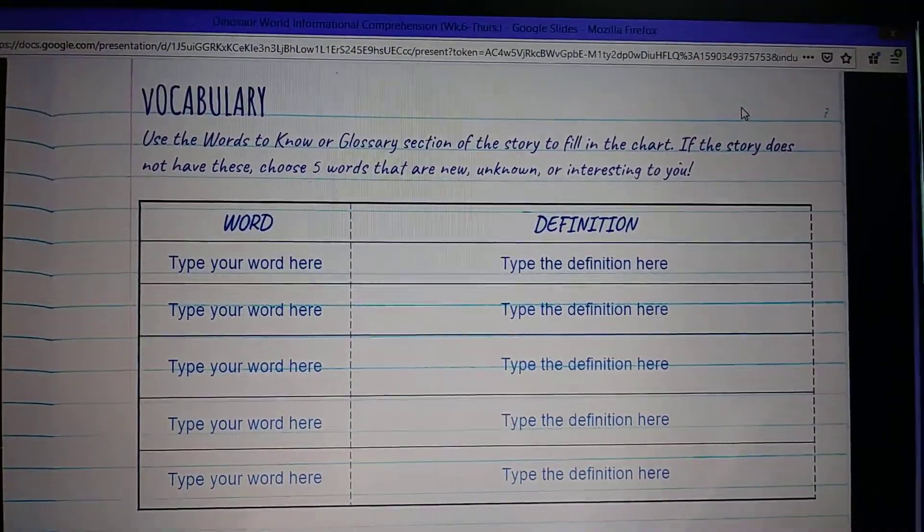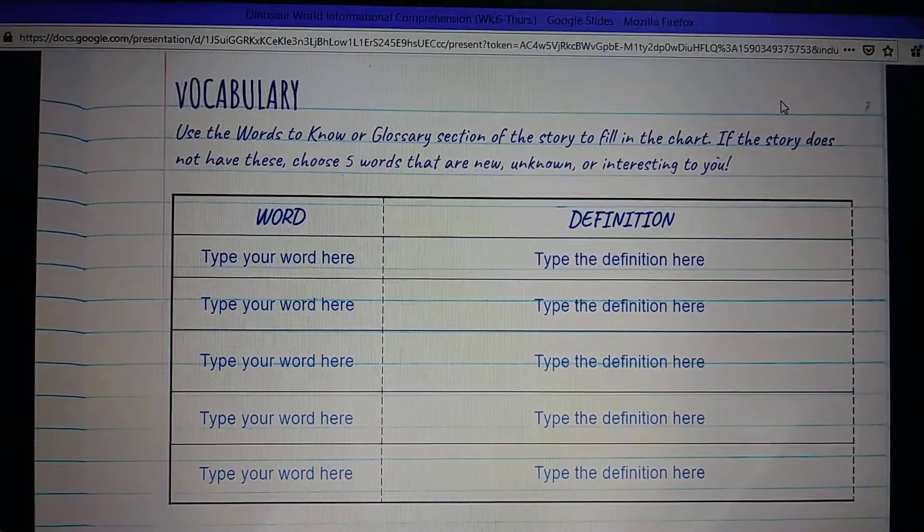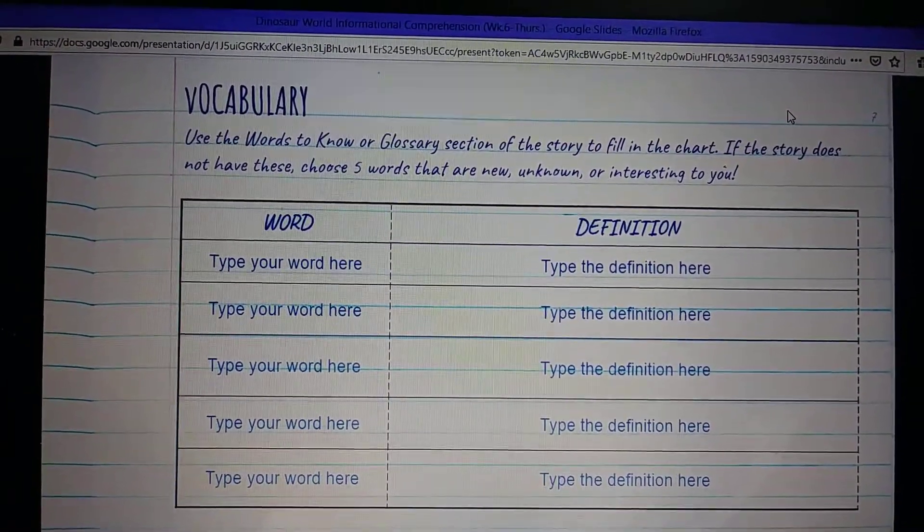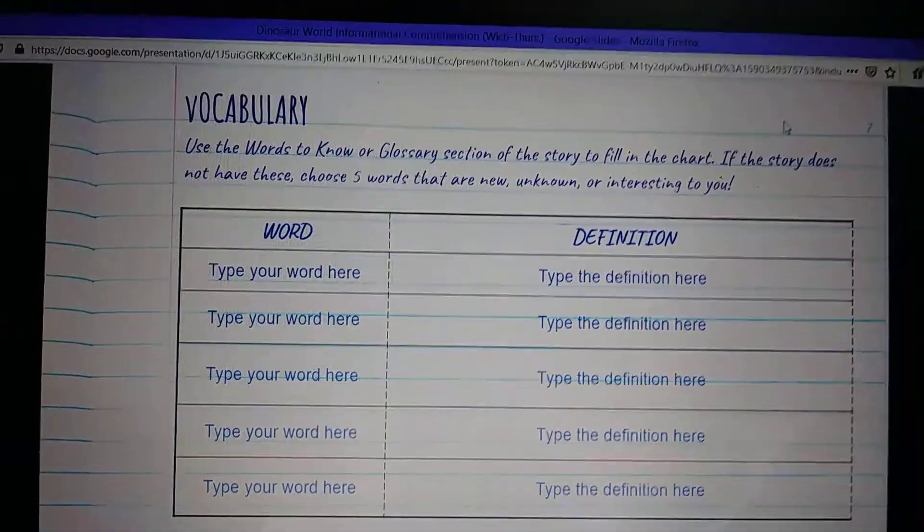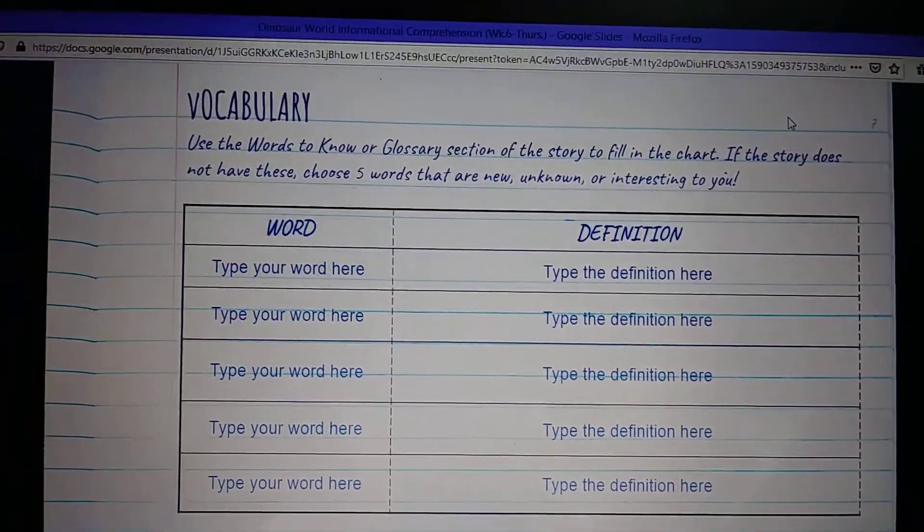Vocabulary. Use the Words to Know or Glossary section of the story to fill in the chart. If the story does not have these, choose five words that are new, unknown, or interesting to you.